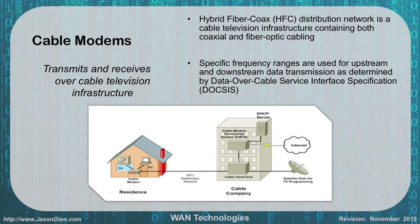The next technology is cable modems. Cable modems transmit and receive over the current cable television infrastructure using a hybrid fiber coax system — an HFC distribution network that provides cable TV infrastructure to homes using both coaxial and fiber optic cabling. Most cable modems can reach up to 150 megabits per second download on higher speed tiers. They use specific frequency ranges for upload and download, and we use this with DOCSIS — Data Over Cable Service Interface Specification. On the exam, if you see DOCSIS, they're talking about cable modems.